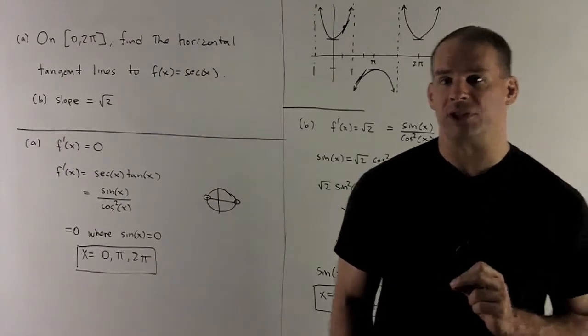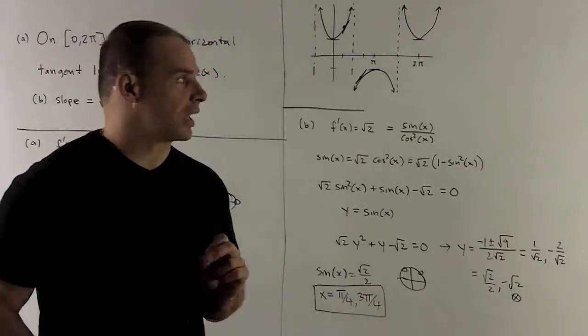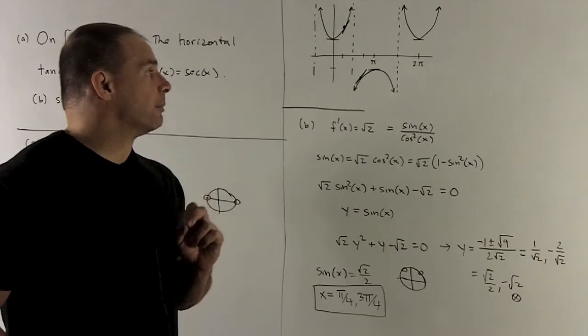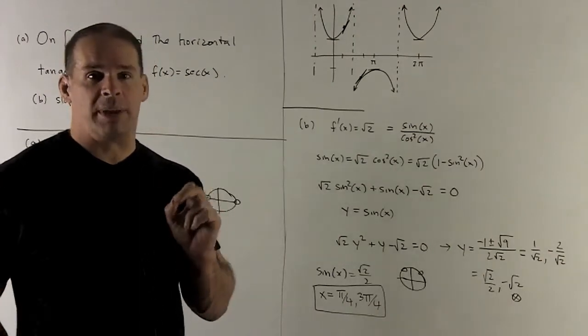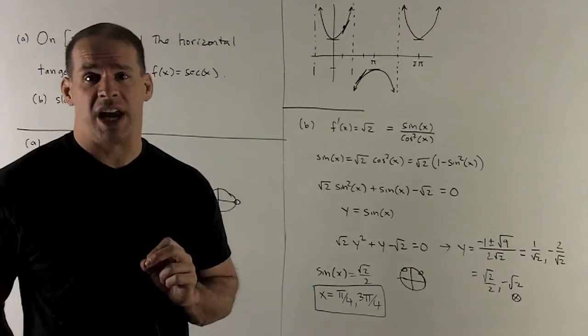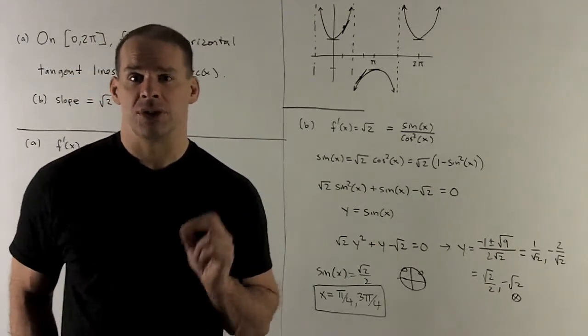Let's take a look at the graph to check that. Our graph of secant is going to look like this. If we look it up, for instance, you'll note that every multiple of π, that's going to be at the bottom or top of those bowls. So there are horizontal tangent lines happening at multiples of π. That checks out.